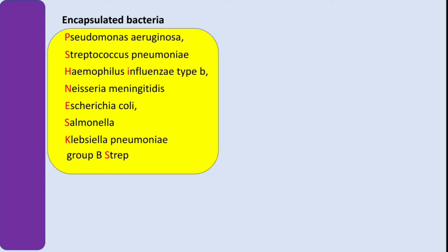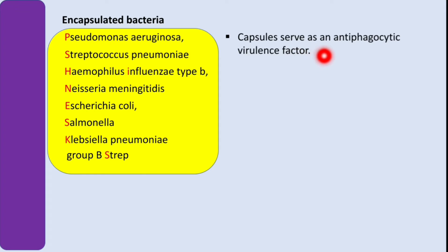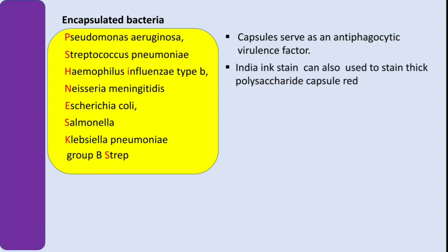Why is this capsule so important? The capsule serves as an antiphagocytic virulence factor — it protects the bacteria against phagocytosis by white blood cells. In diagnosis, we use a special stain called Indian ink stain, which can be used to stain the thick polysaccharide capsule.